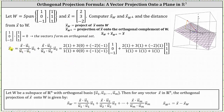The projection of vector x onto W equals (x · u1)/(u1 · u1) times u1, plus (x · u2)/(u2 · u2) times u2. For the first term, x · u1 is (2)(1) + (3)(0) + (-2)(-1), divided by u1 · u1, which is (1)(1) + (0)(0) + (-1)(-1), times the vector (1, 0, -1).